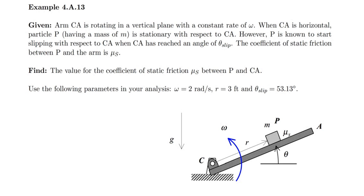In particular, what we have here is an arm CA which is rotating in a vertical plane at a constant rate of omega. And we're told that when CA is horizontal, particle P, having a mass of little m, is stationary with respect to the arm.